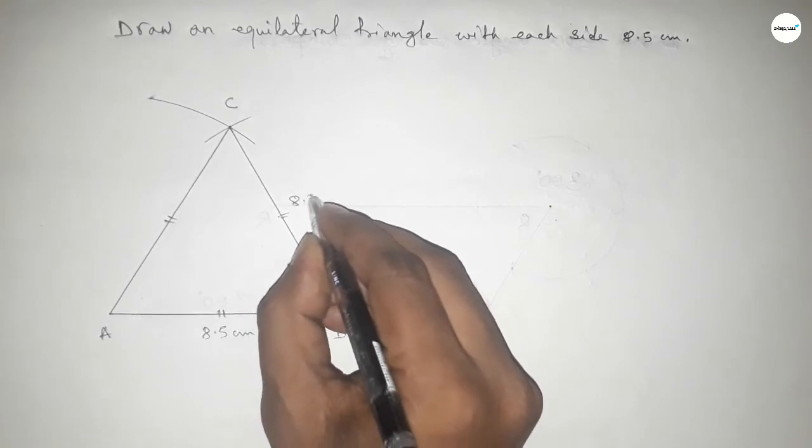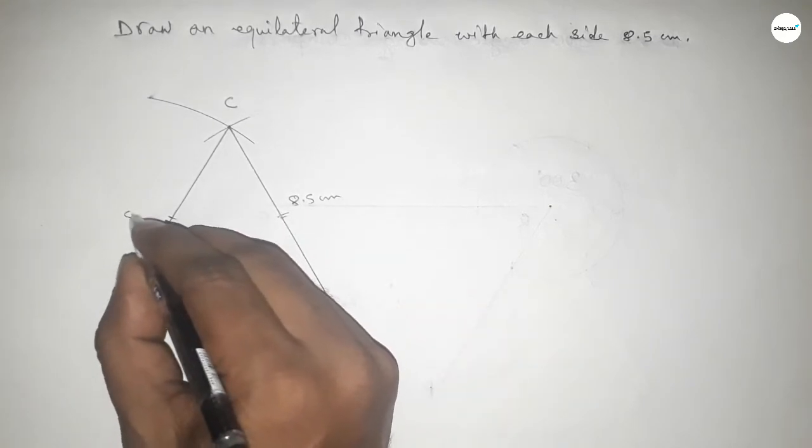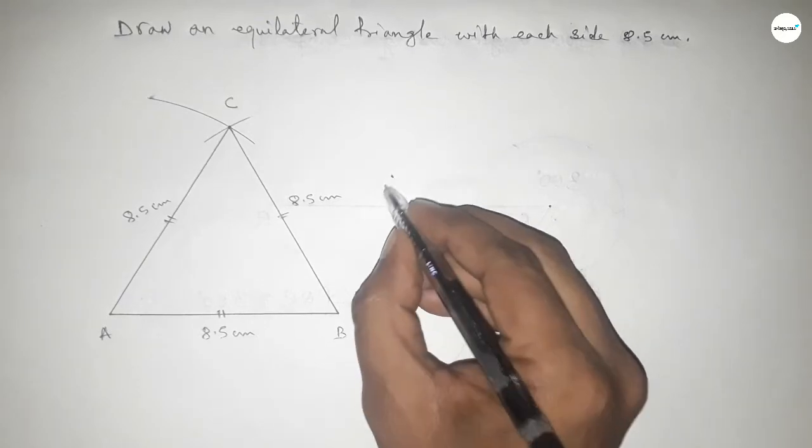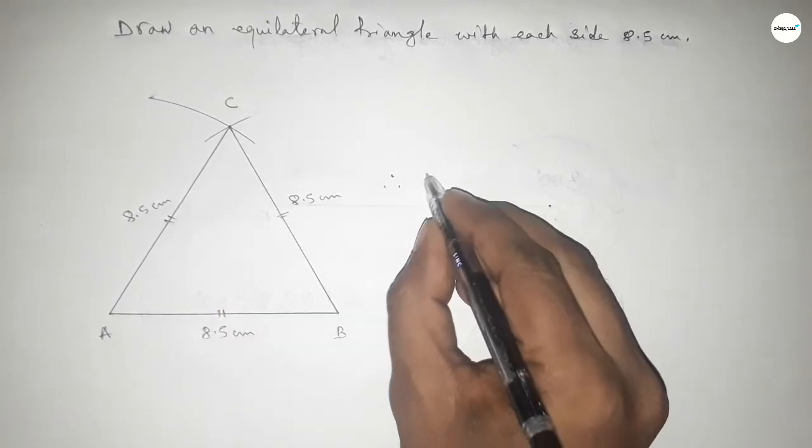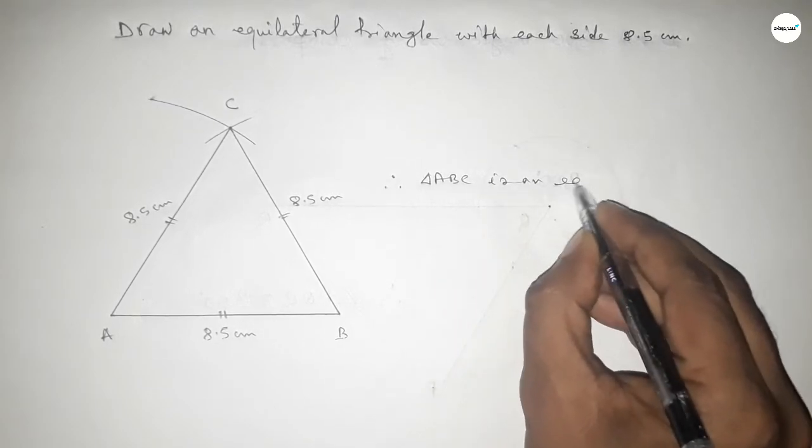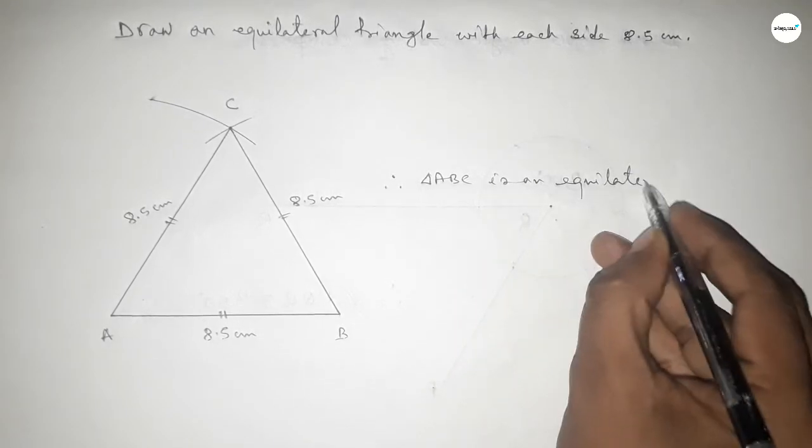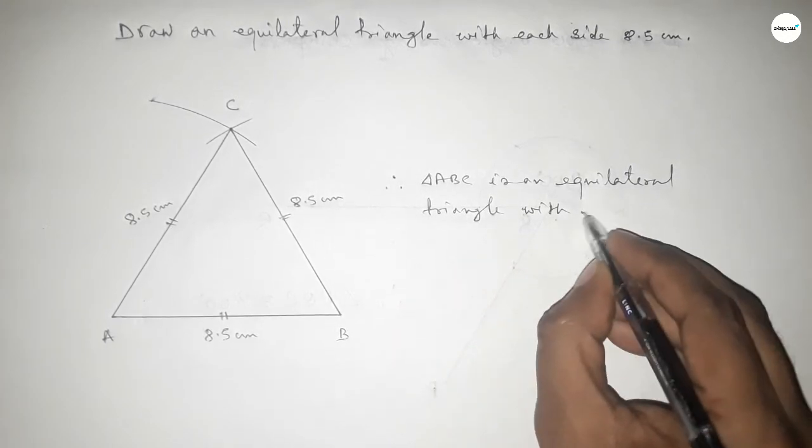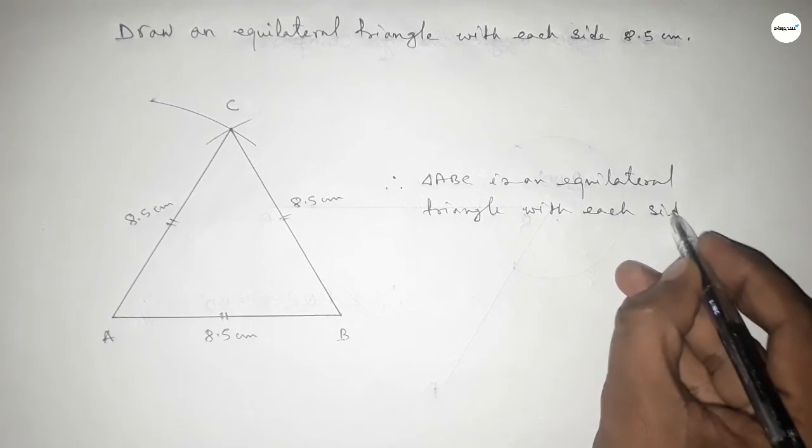So this is 8.5 centimeters and this side 8.5 centimeters and this side also 8.5 centimeters. Therefore triangle ABC is an equilateral triangle with each side 8.5 centimeters.